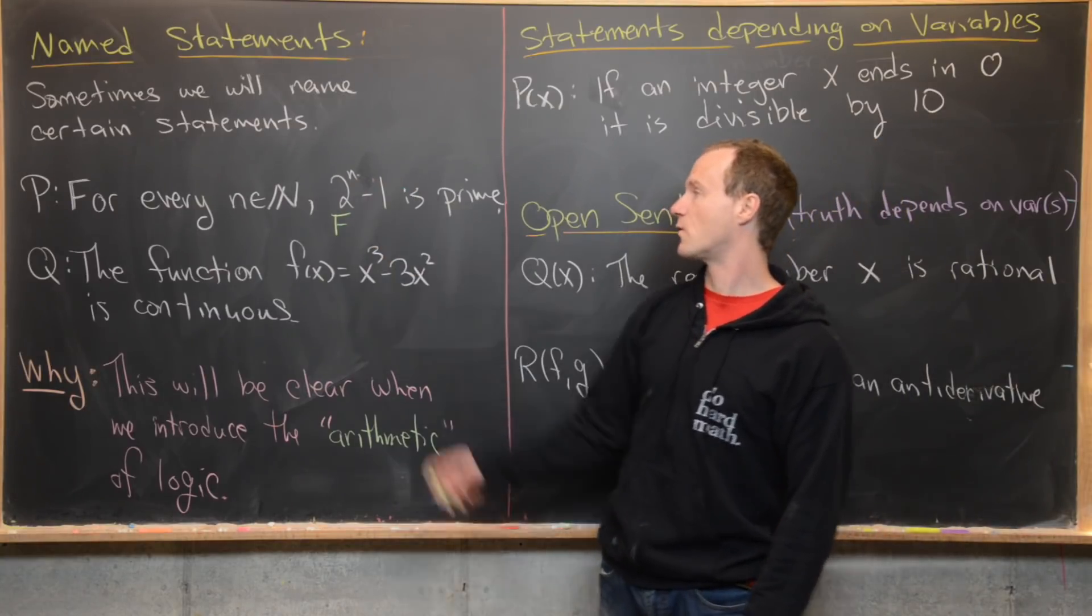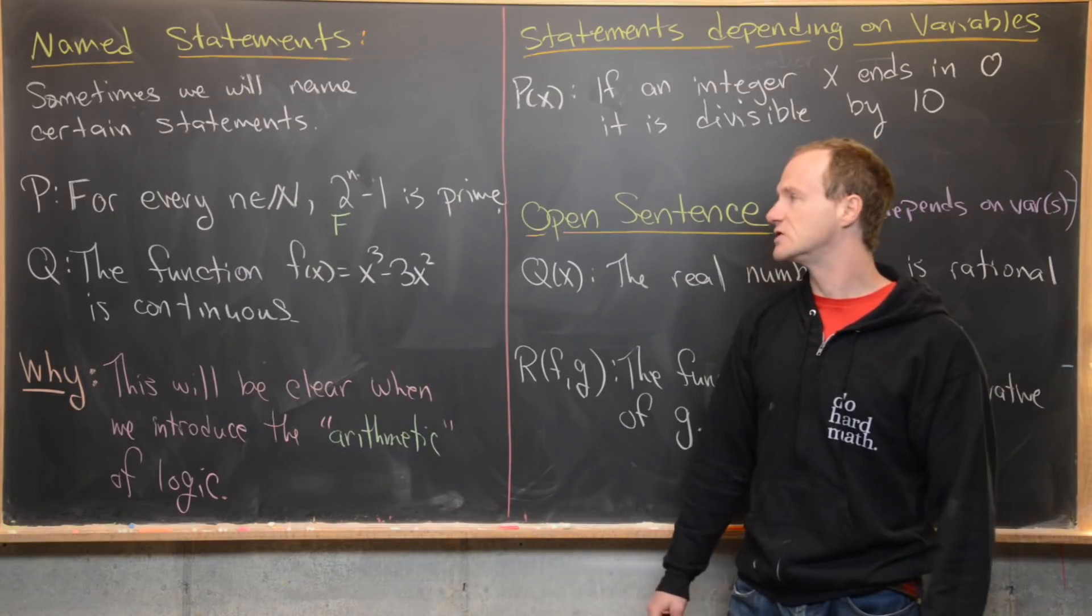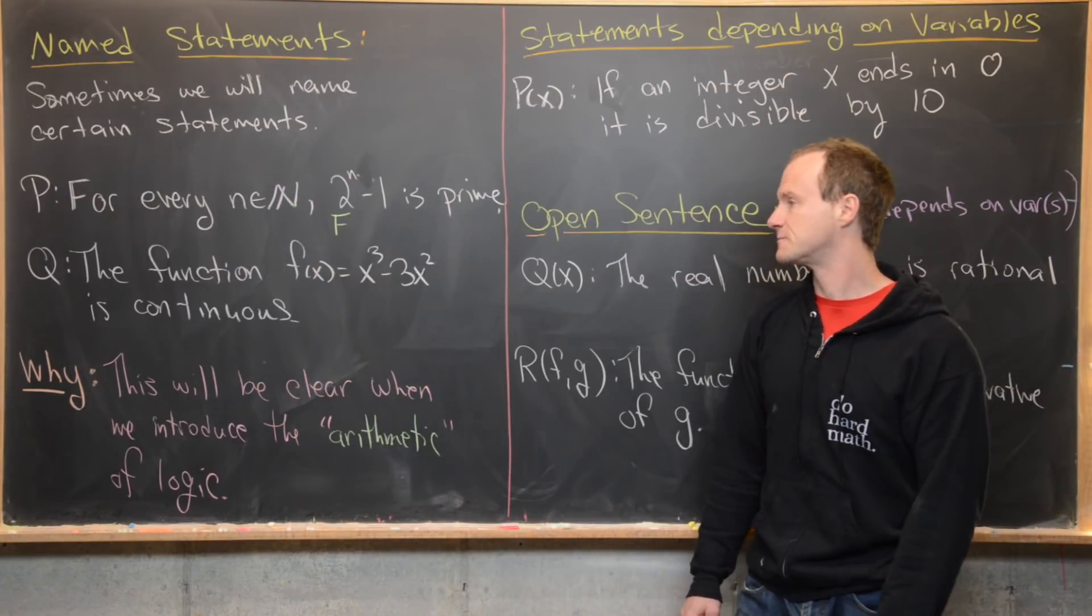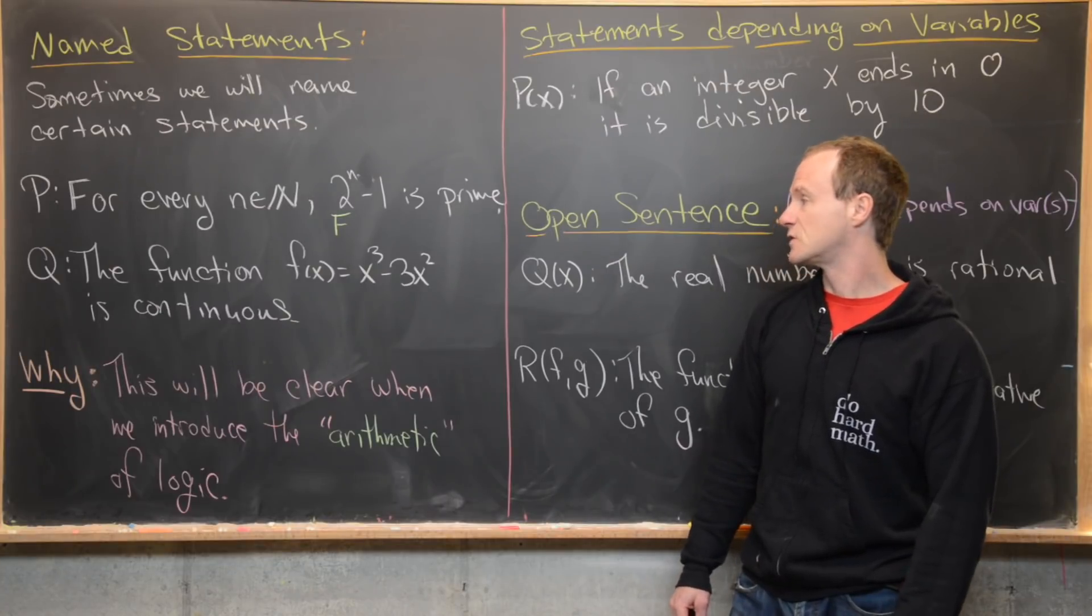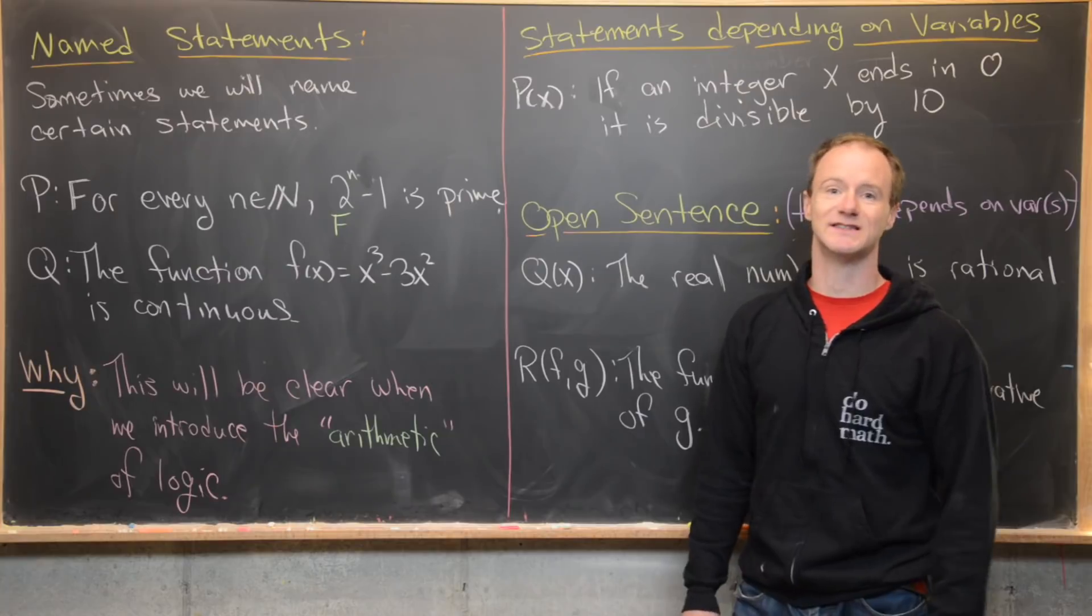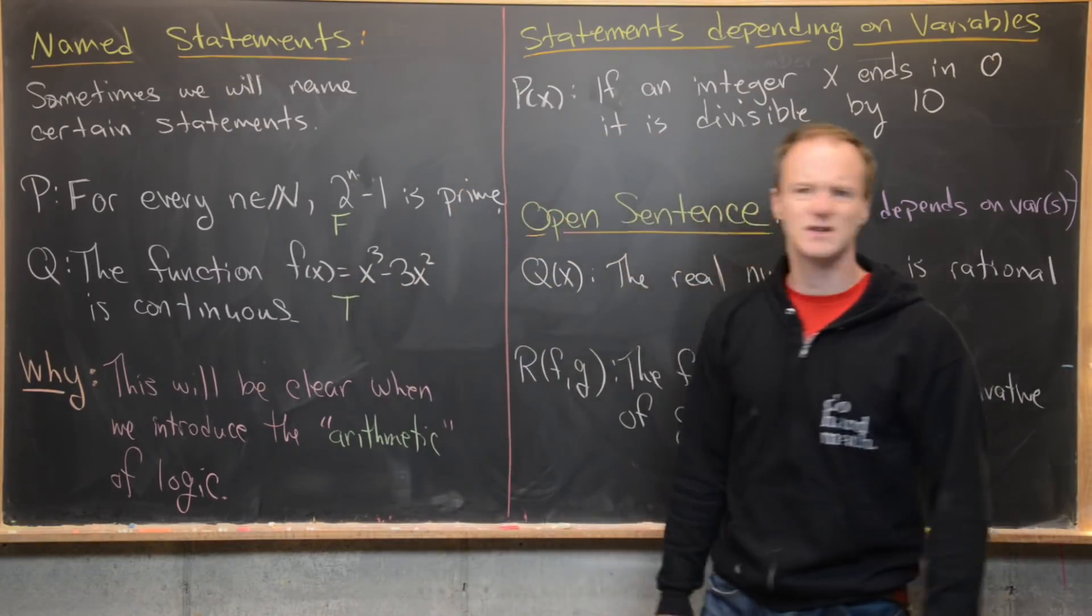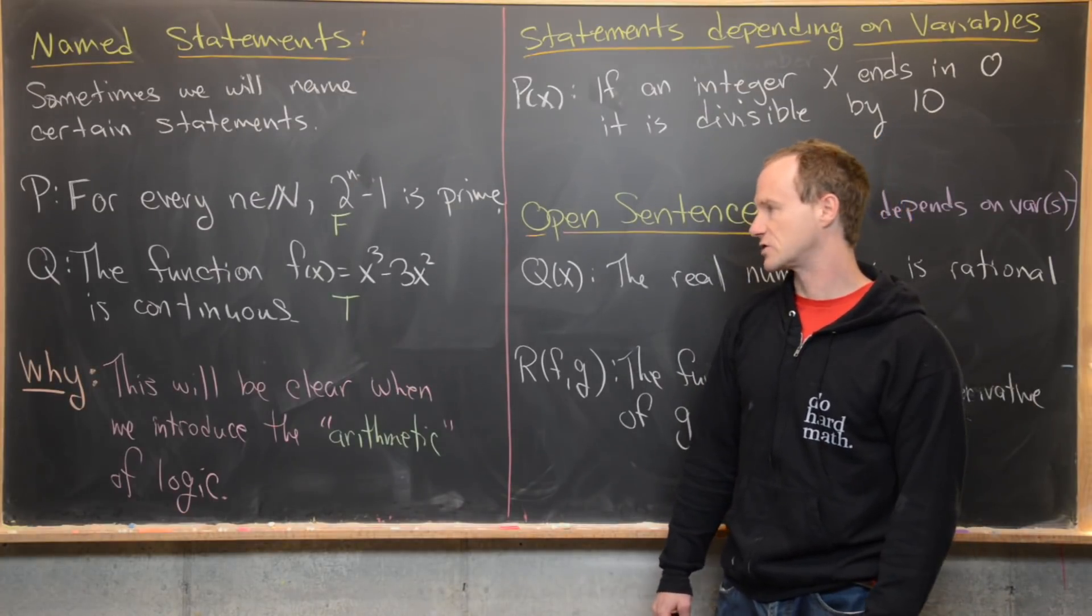In other words, a number of the form two to the n minus one that is not prime. I urge you to look into it to find out what that number is. Here's a statement Q: the function f of x equals x cubed minus three x squared is continuous. This is a true statement. It's well known that all polynomial functions are continuous.